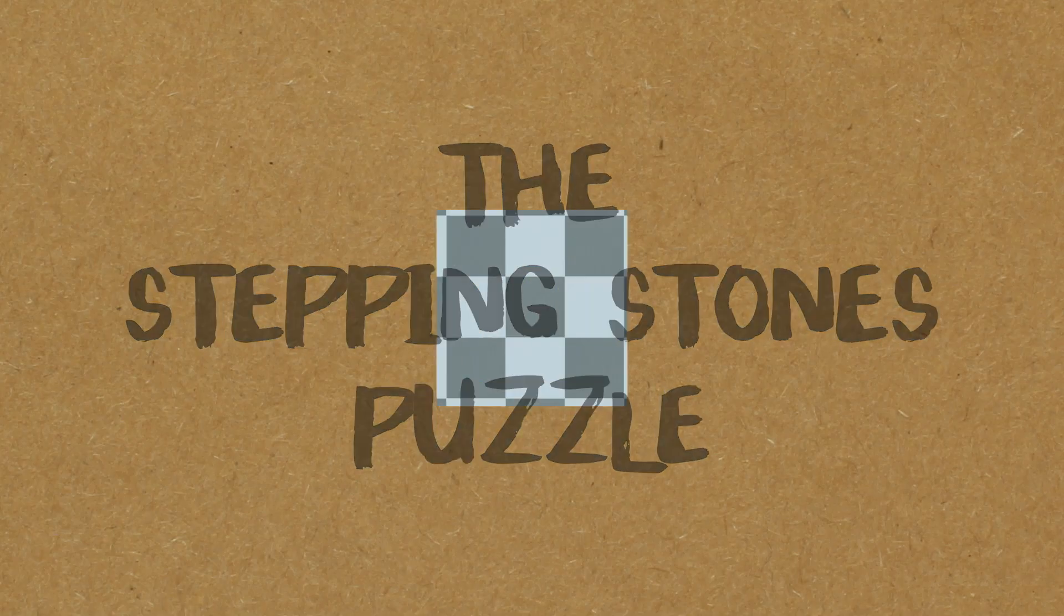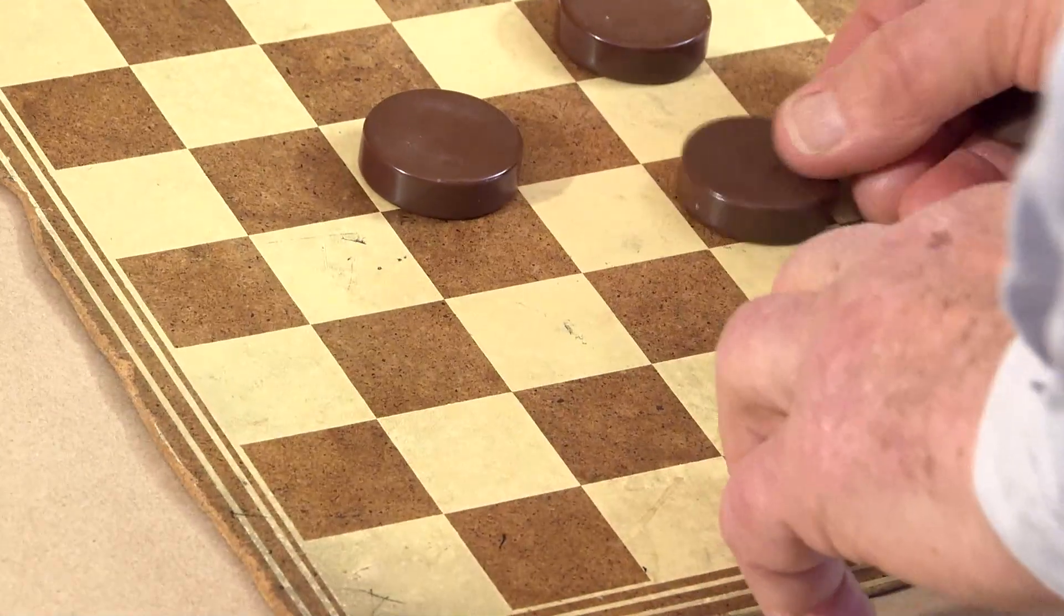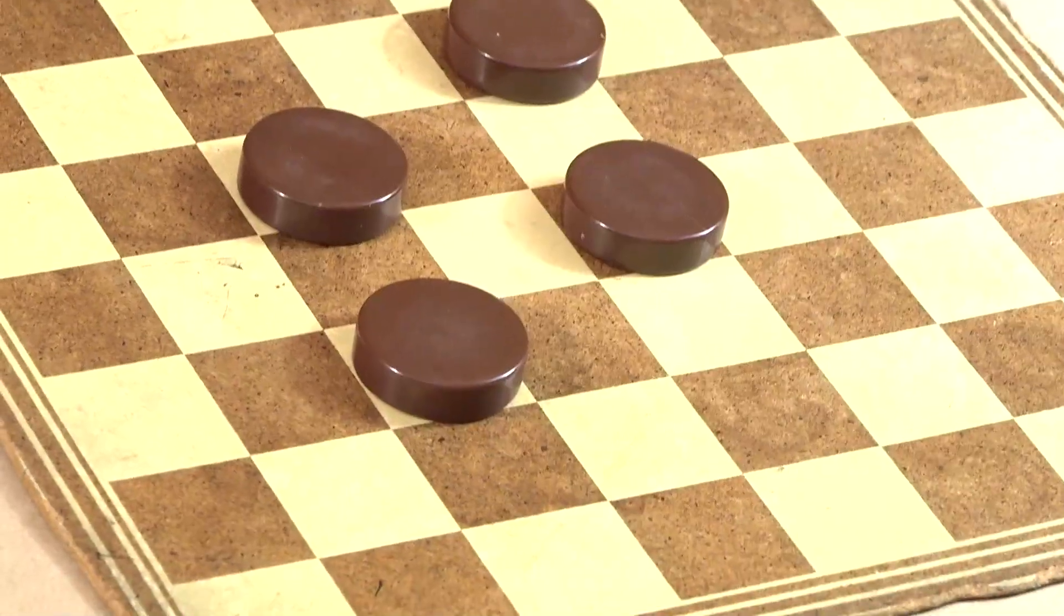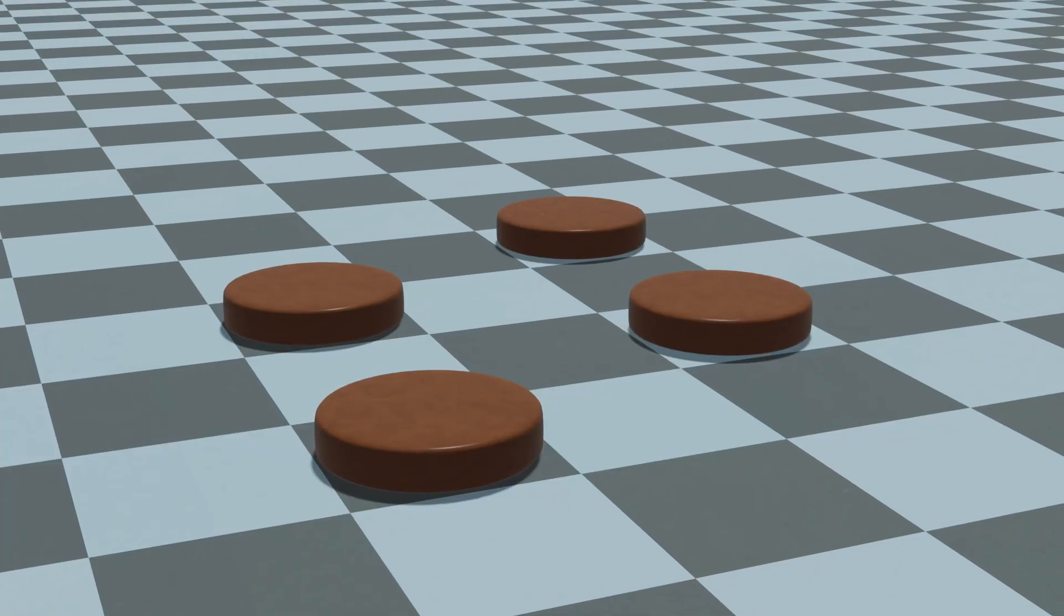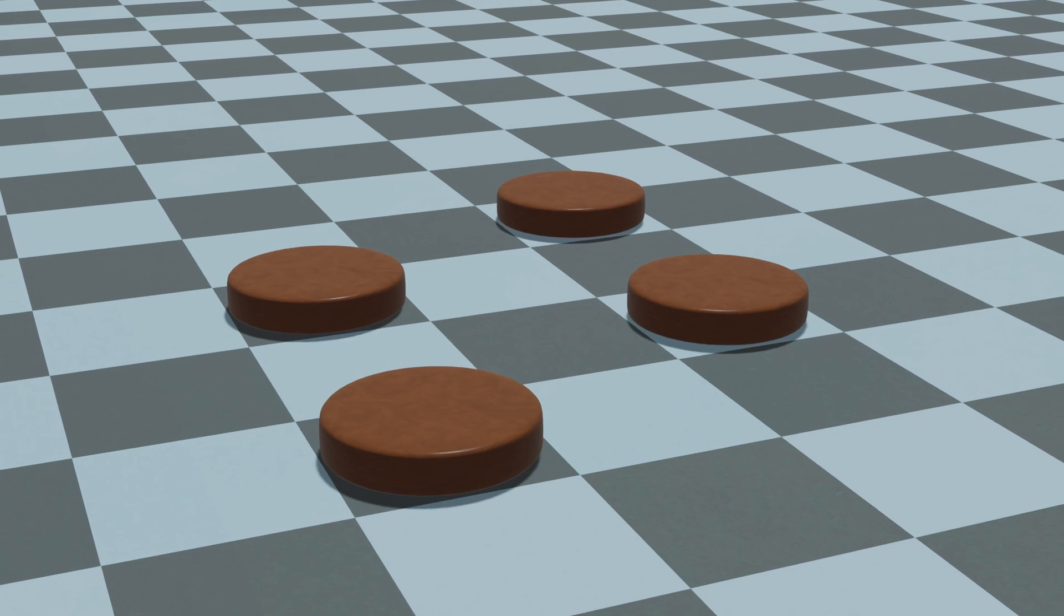You've got a chessboard. It's infinite and you've got a certain number of brown stones that are worth one point each. The puzzle is you can put down the brown stones anywhere you want. Say you've got four brown stones. That's fixed. You put down your four brown stones and then you add the white stones. The white stones are numbered 2, 3, 4, 5, 6.